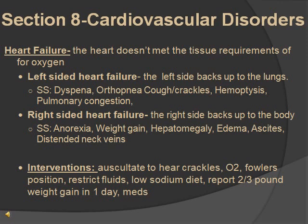The right side gets blood from the body and gives it back to the lungs. If this isn't working properly, there's a backup to the body, causing edema, weight gain, hepatomegaly, ascites, and distended neck veins. Interventions for both: auscultate for crackles, give oxygen, place in Fowler's position, restrict fluids, follow a low sodium diet, report a 2 to 3 pound weight gain in one day, and give medications like diuretics, calcium channel blockers, ACE inhibitors, and ARBs.